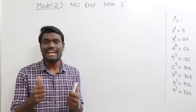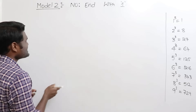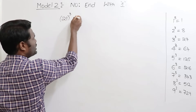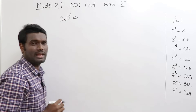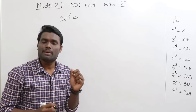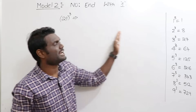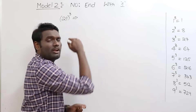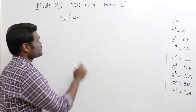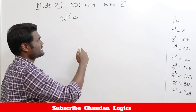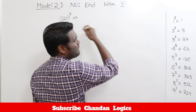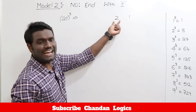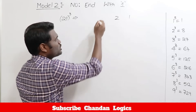Now let's look at Model 2 — numbers ending with one. Example: 21 cubed. This is similar to Model 1, but instead of going left to right, you go right to left. Starting from the right-hand side, write the same digits: 1 and 2. Square of the second number: 2 squared is 4.